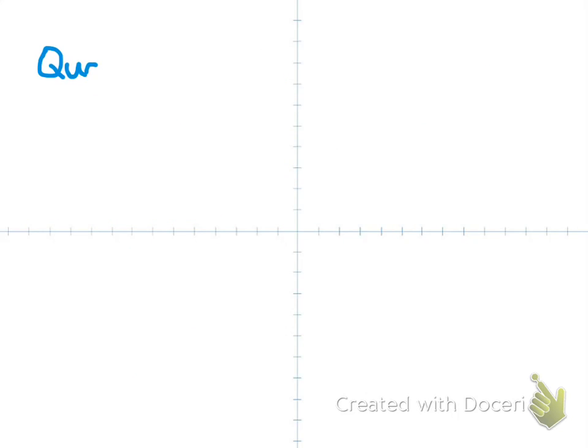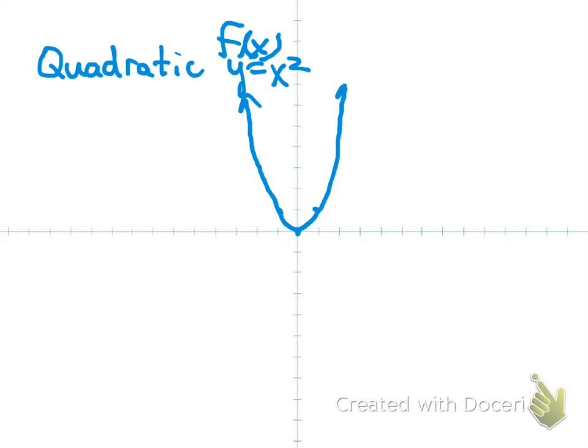So you've got an idea of what the graph looks like, what the function looks like, and some of its characteristics. Now let's look at the quadratic. Linear and quadratic are going to be our biggest two throughout this class. That one is y equals x squared, or it could be f of x equals x squared. So kind of keep that in mind. The graph looks like that, it's a u-shaped graph. That's called a parabola. The u-shape is called a parabola.